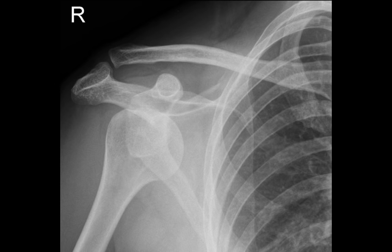And finally, what's the abnormality of this shoulder? It's another anterior dislocation.